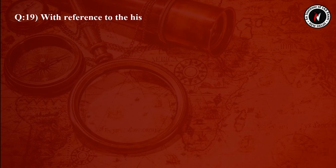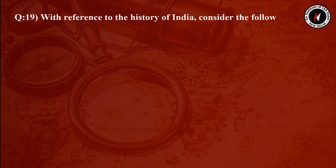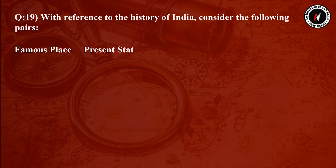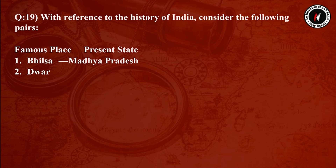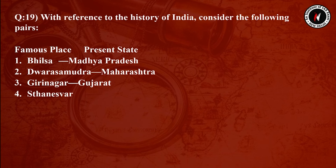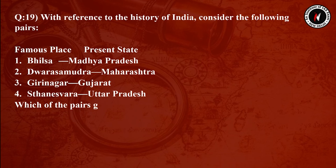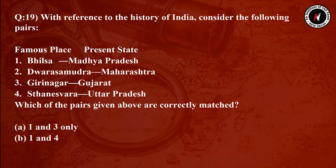Question number 19: With reference to the history of India, consider the following pairs of famous places and present states — 1: Bhilsa – Madhya Pradesh. 2: Dwarasamudra – Maharashtra. 3: Girinagar – Gujarat. 4: Sthaneshwar – Uttar Pradesh. Which of the pairs given above are correctly matched?